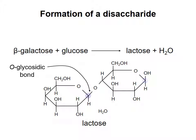Even though the anomeric carbon of galactose no longer has a hydroxyl group on it, you can tell whether its configuration is alpha or beta by comparing the position of the oxygen of the O-glycosidic bond with that of the highest numbered carbon. For example, in lactose, the oxygen of the O-glycosidic bond is pointing up, on the top side of the pyranose ring of galactose. The highest numbered carbon of galactose is on the same side of the ring, and therefore the galactose group of lactose is in the beta configuration.